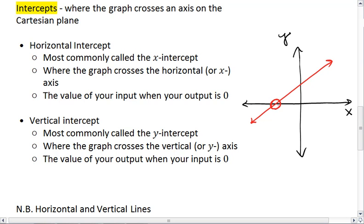If we have a graph, this point right here is your x-intercept or your horizontal intercept. This is where the graph crosses the x-axis. It is the value of your input when your output is zero. It's very important to understand that idea.